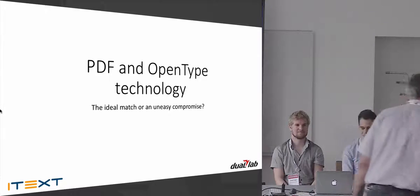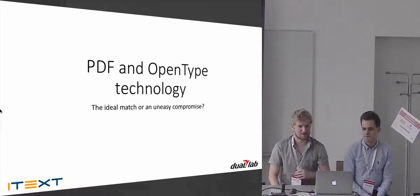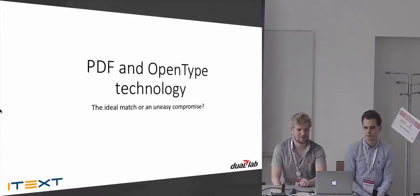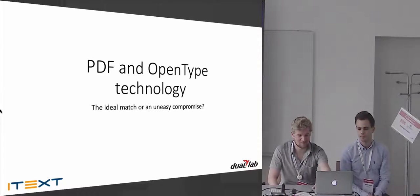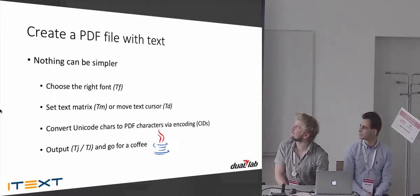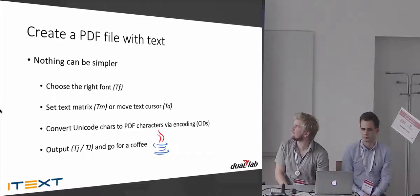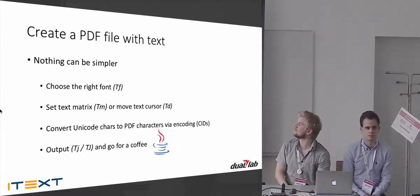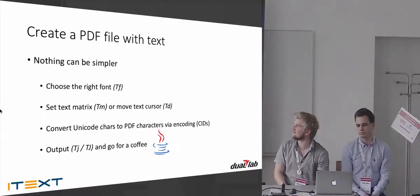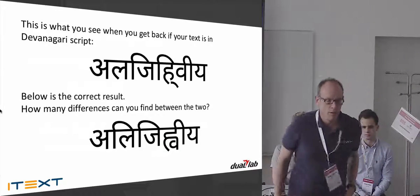We start with OpenType as a font in PDF — it's a very complex subject, so we'll try to be as clear as possible but there are some corners we'll have to cut sometimes. You might think it would be trivial to create a PDF file with text, and in most cases, at least with English or Latin scripts, it's easy: you choose your font, set the text matrix, move the cursor to the initial position, convert unicode code points to PDF characters through their CIDs, and output with the TJ operator. For Latin text, everything should be fine.